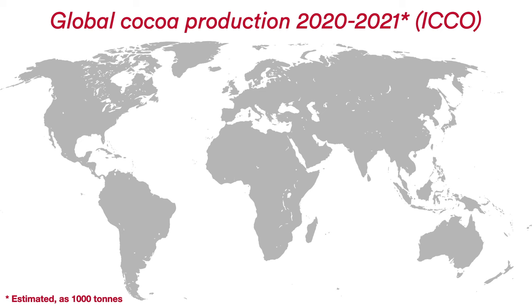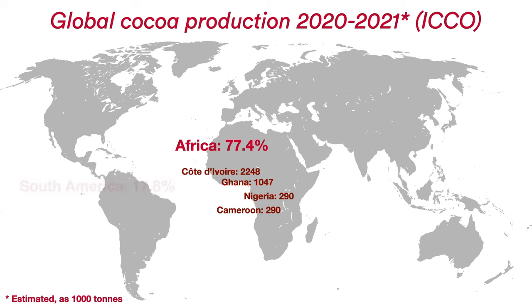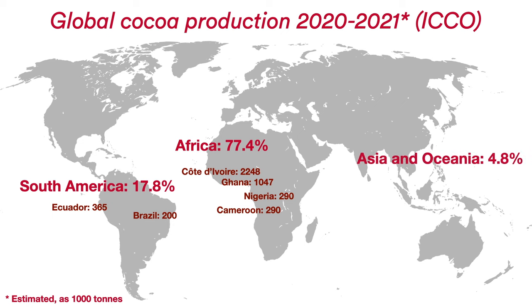Most of our cocoa, about 70%, comes from West Africa, with Ivory Coast and Ghana by far being the two largest producers. But Latin America, the Caribbean, Asia and Oceania are also important producing regions, and about 5 million tons of cocoa are produced globally each year.